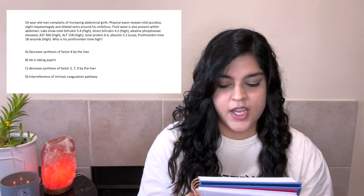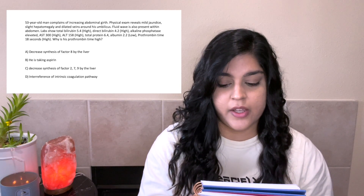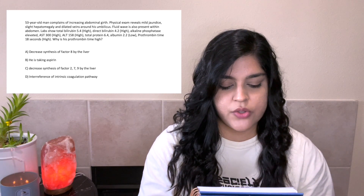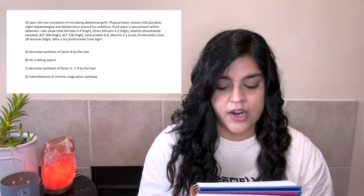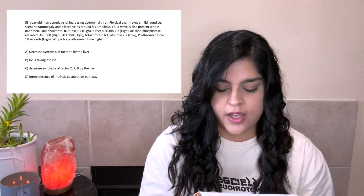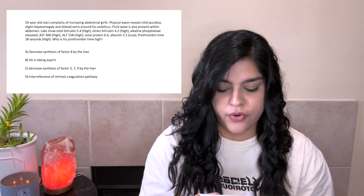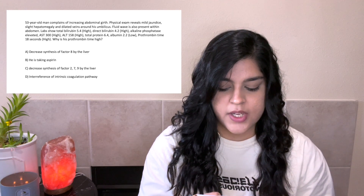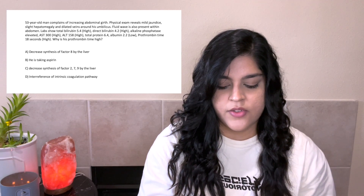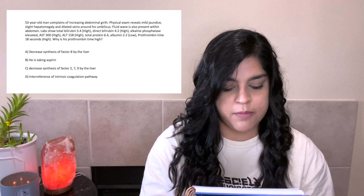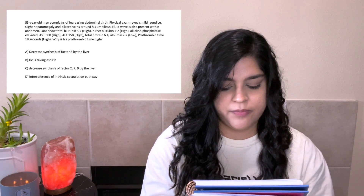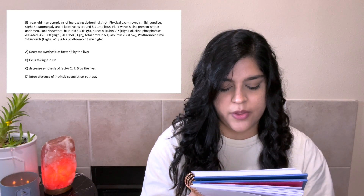So we have a 53-year-old man complaining of increasing abdominal girth. Physical exam reveals mild jaundice, slight hepatomegaly, and dilated veins around his umbilicus. A fluid wave is also present. Labs show total bilirubin 5.4 (high), direct bilirubin 4.2 (high), alkaline phosphatase elevated, AST 300 (high), ALT 150 (high), total protein 6.4, albumin 2.2 (low), and prothrombin time 18 seconds (high). Then I read the question again: 'Why is his prothrombin time high?'